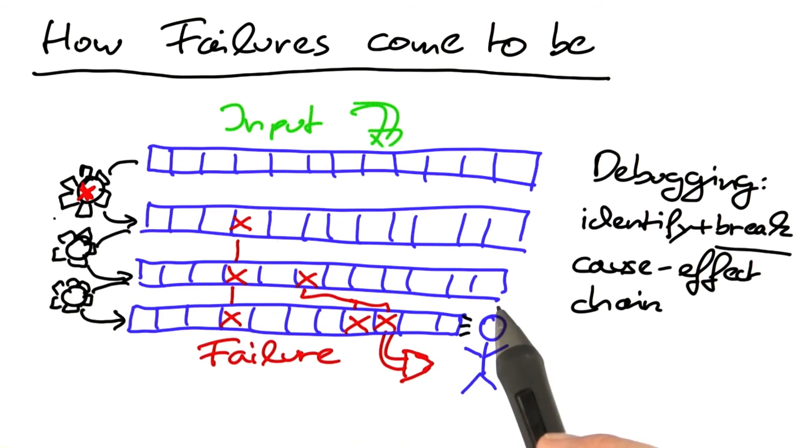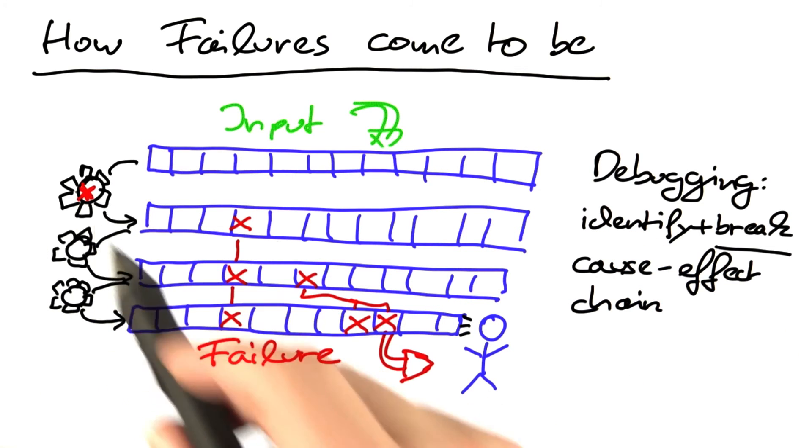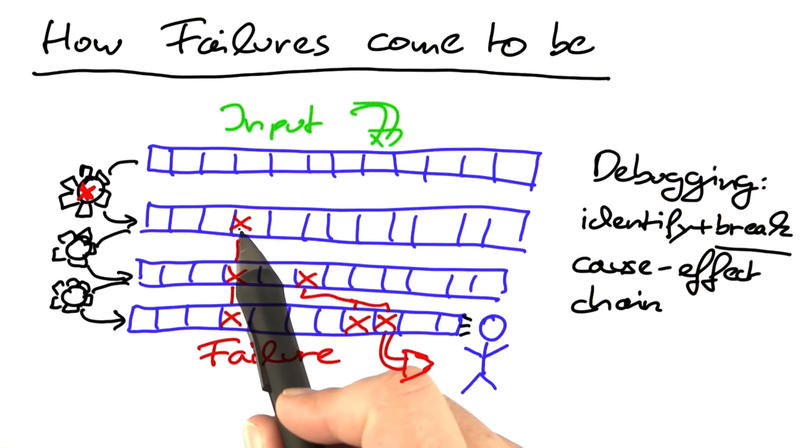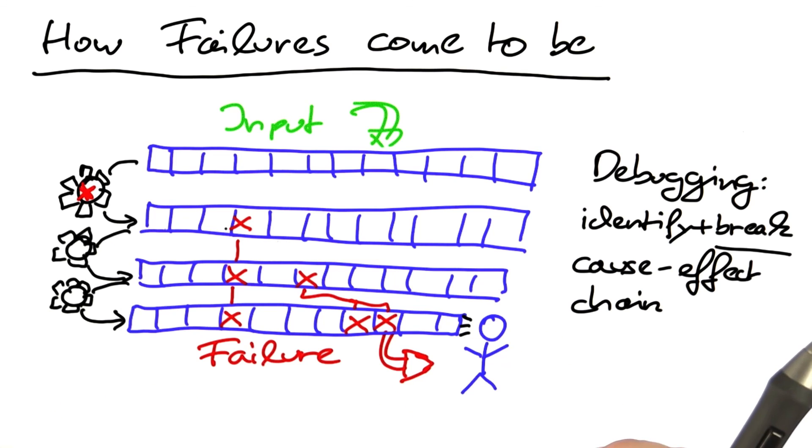So tracing back the cause-effect chain can be much, much more complicated than it is in this simple picture. The longer the cause-effect chain, that is, the longer the time we have to cover, the more states we have to cover, the harder it is to debug it. And also, the larger the state, the more we have to search for an infection. Again, this makes debugging harder and harder. It's like finding a needle in a haystack, except that the haystack sometimes is larger than any haystack you'll ever find on Earth.